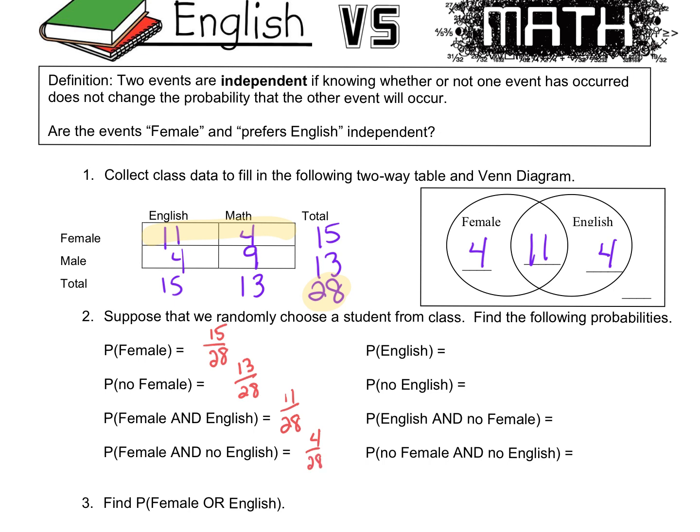When you get it in the two-way table, it's a lot easier to answer these questions. Probability of people just liking English would be this row total — so that would be 15 out of 28 again. And probability of no English, preference math, that would be 13 out of 28. And English and no female — that would be 4 out of 28. You could reduce 4/28 to 1/7 if you wanted, but 4/28 is fine.